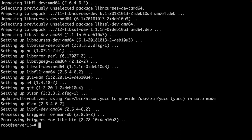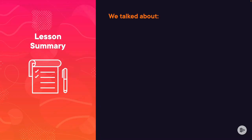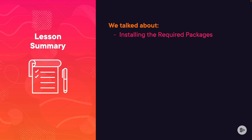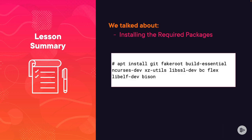In this lesson, we talked about what the required packages for a kernel build are: git, fakeroot, build-essential, ncurses-dev, xz-utils, libssl-dev, bc, flex, libelf-dev, and bison. We also talked about installing the required packages.